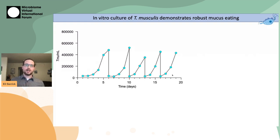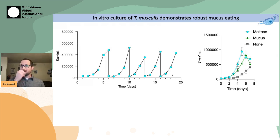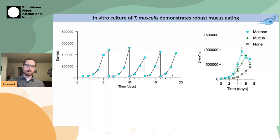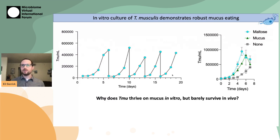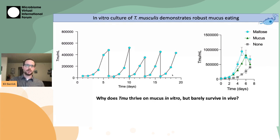This breakthrough has opened up a lot of potential applications for mechanistic studies on these protists. The first application I wanted to pursue was figuring out whether the protists can actually eat mucus. I did growth curves on T. musculus with and without mucus — which seems like a boring experiment, but for us it was groundbreaking. This showed that T. musculus is in fact able to grow on mucus when provided as the sole defined carbon source. However, the protists grew a little too well in vitro with mucus, because remember, the protists barely hang on in vivo — yet here they grew just as well as the positive control.